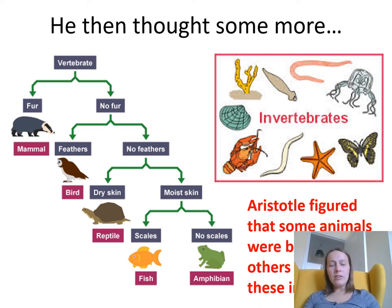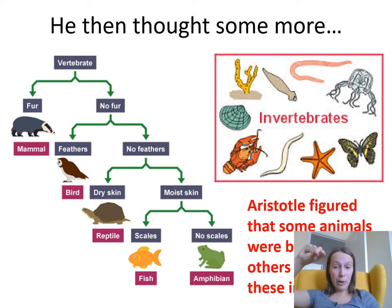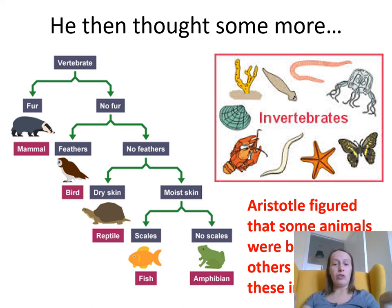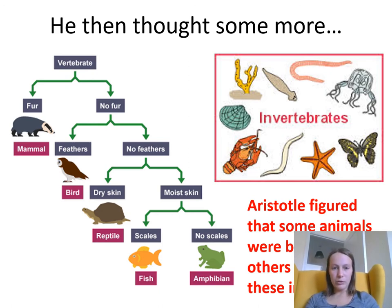He started by thinking about vertebrates and invertebrates. Vertebrate just means it's got a spine, it's got a backbone. Invertebrate means it doesn't. So picture you pick up a worm — it's all floppy, it's not got a spine. It's in a different category to, say, a cat or a dog which has got bones inside it. It's talking about whether it has bones, particularly a spine, or not.